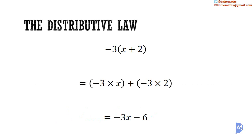The distributive law shows that negative 3 multiplied by x plus 2 gives negative 3x added to negative 6. The question is: given negative 3x added to negative 6, how do we work backwards to get negative 3 multiplied by x plus 2? We do this using the HCF. We find the HCF of the two terms in the expression, then determine what we need to multiply by to get each term, and add these together.